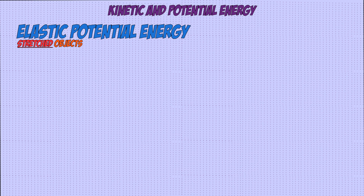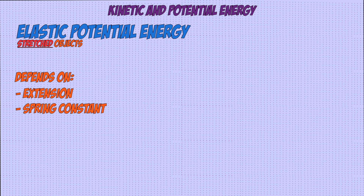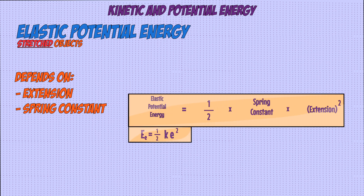The third equation we're going to look at is elastic potential energy, which is energy stored in a stretched object. This depends on how much the object is stretched — which we call the extension — and the spring constant, which is how stiff the object is. The equation for this is similar to kinetic energy: half times spring constant times extension squared, where elastic potential energy is measured in joules, spring constant in newtons per meter, and extension in meters.